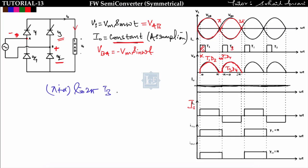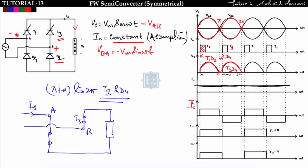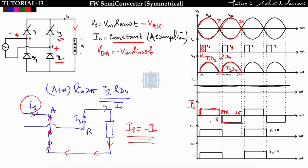From pi+alpha to 2pi, T3 and D4 conduct. In this equivalent circuit, i0 flows opposite to the source current direction, so is = −i0. Therefore: source current is +i0 from alpha to pi, zero from pi to pi+alpha, and −i0 from pi+alpha to 2pi. This is the same approach used in lecture 12 for the full wave controlled bridge rectifier.